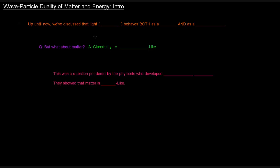Up until now, we've discussed that light, which we said was energy, behaves both as a wave and as a particle. The particles that are in light, of course, we called photons.